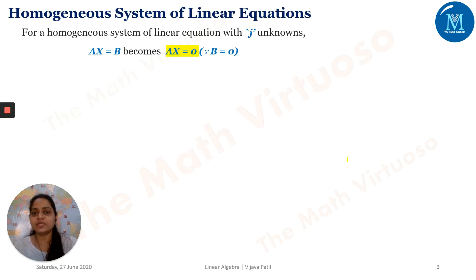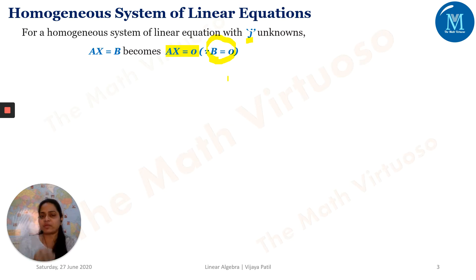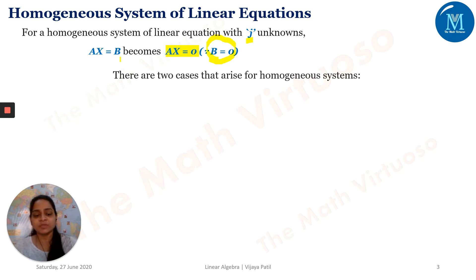Homogeneous system of linear equations — this is for J unknowns. AX equals B becomes AX equals zero. That means what we discussed in the last video: when B equals zero in AX equals B, it's known as a homogeneous system of linear equations.